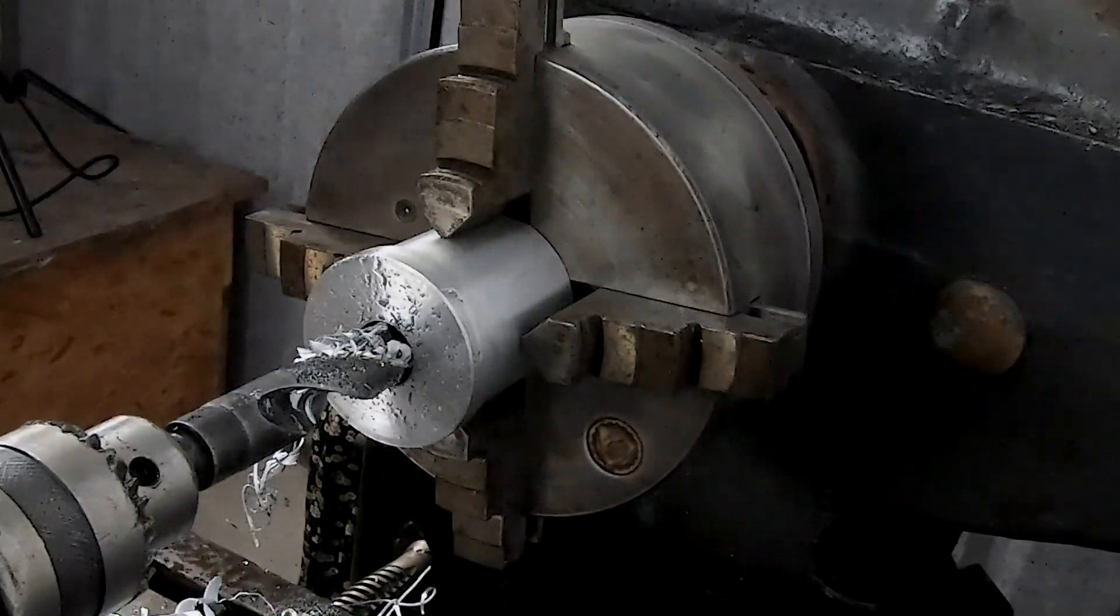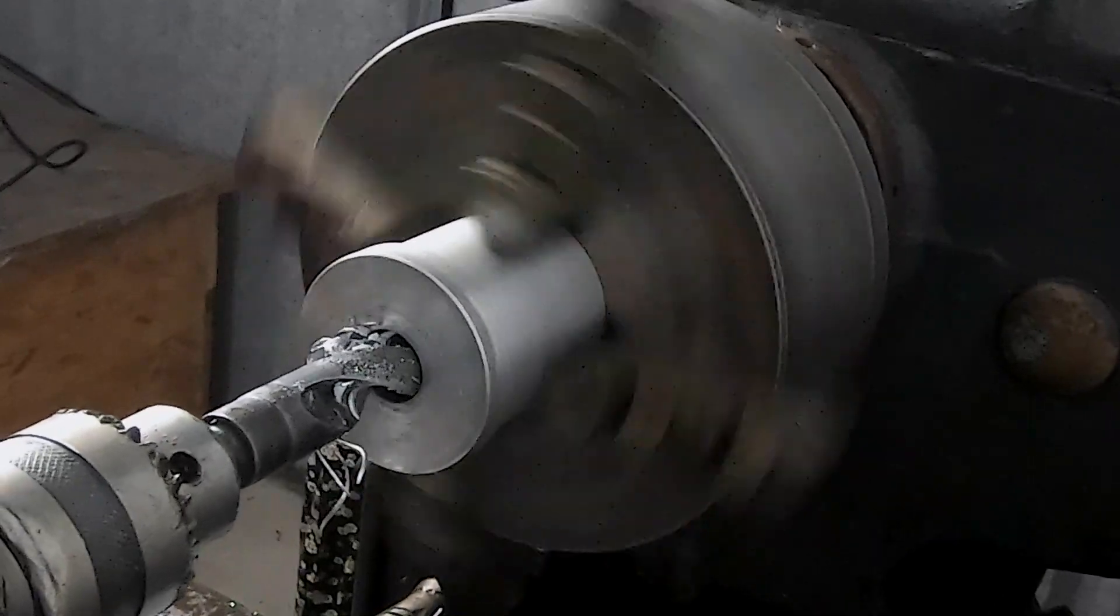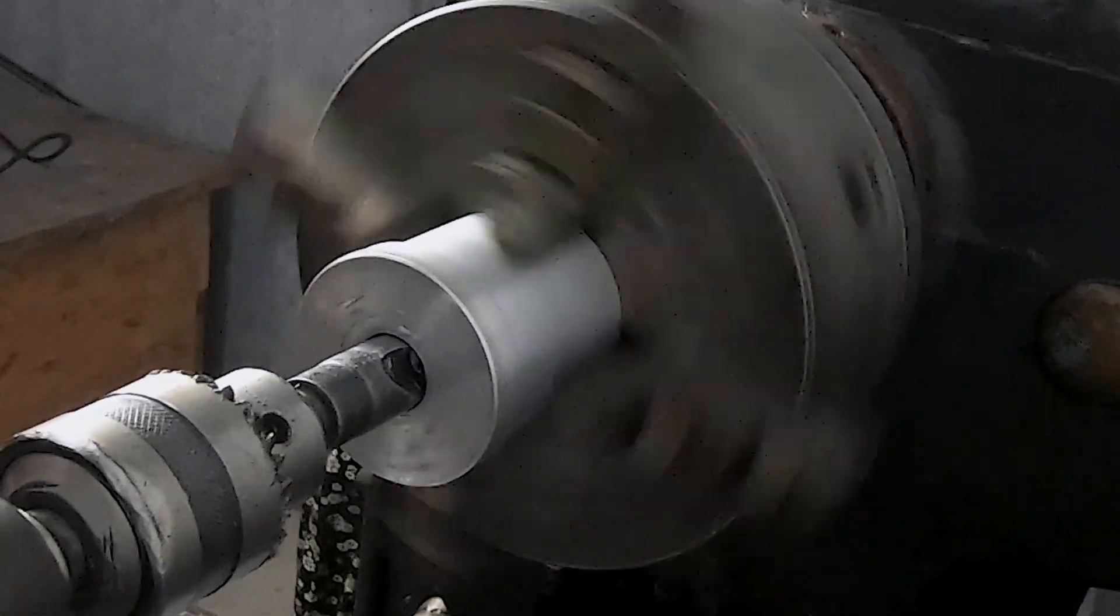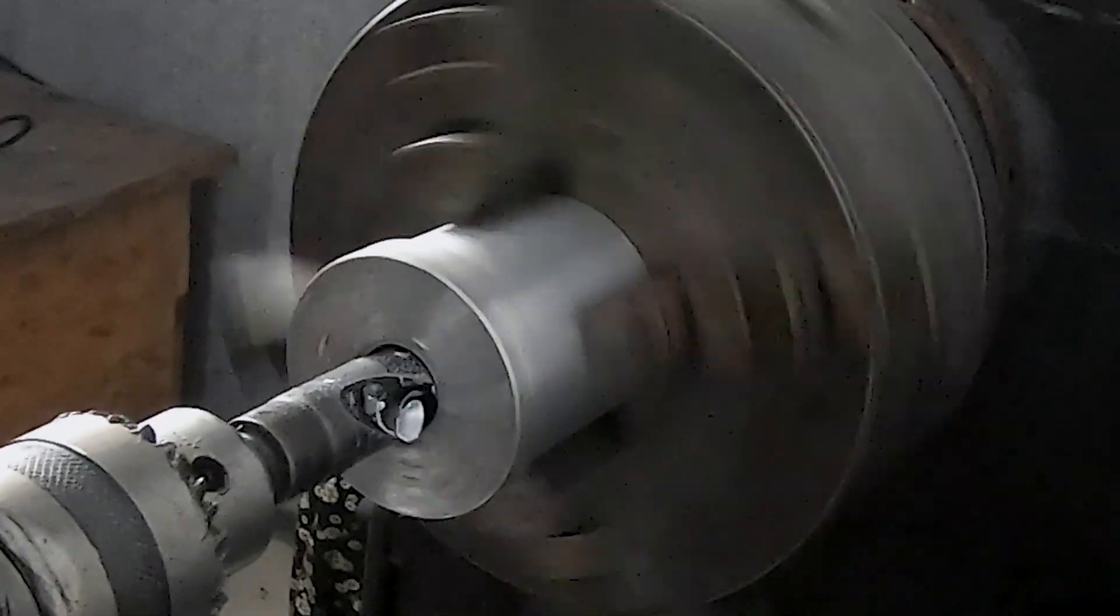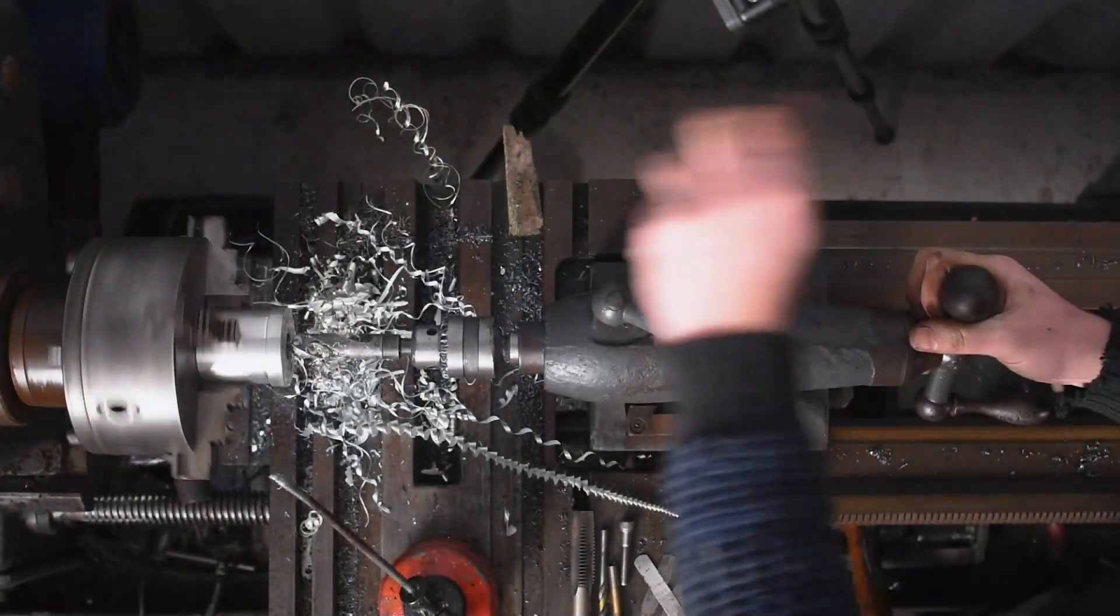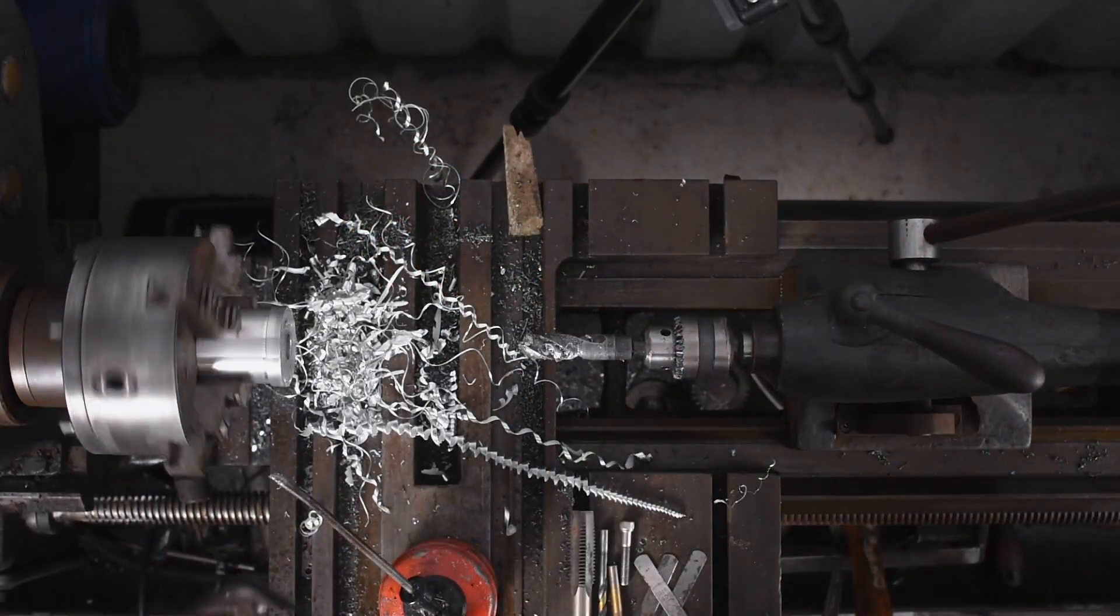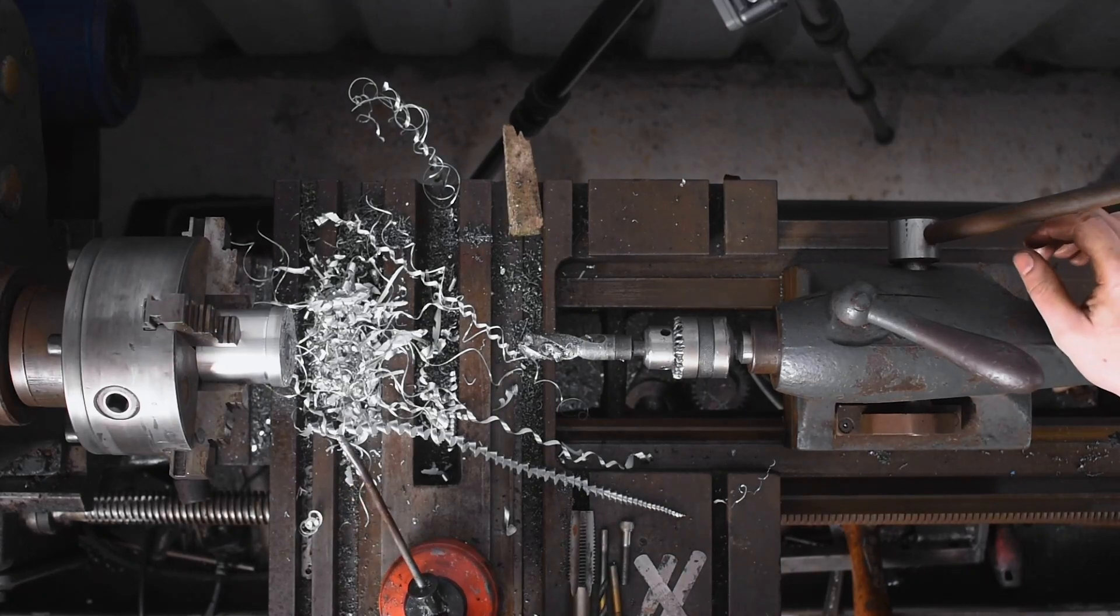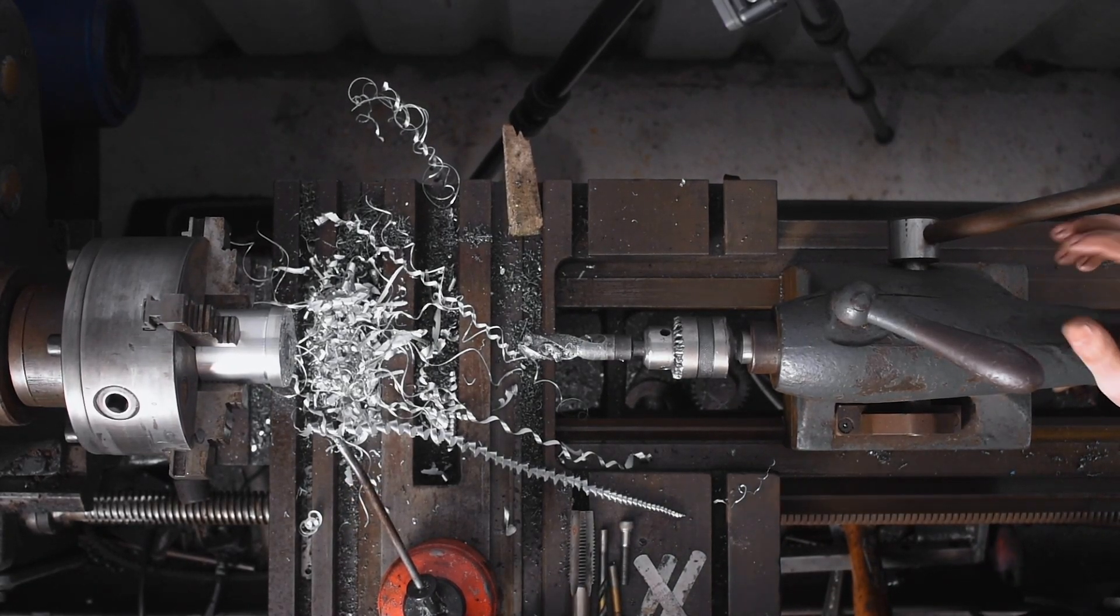With a drill this size, we're going to slow the lathe right down, and this is where the Colchester comes into its own with a big three and a half horsepower motor and the big heavy head that can drive and twist this drill no problem. Okay, that's our boring operation finished here on the Colchester.